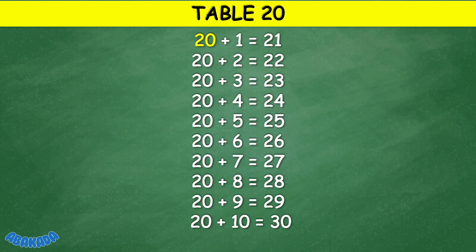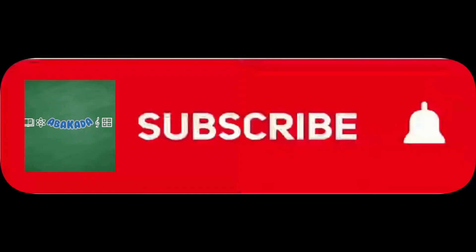Table 20: 20 plus 1 equals 21, 20 plus 2 equals 22, 20 plus 3 equals 23, 20 plus 4 equals 24, 20 plus 5 equals 25, 20 plus 6 equals 26, 20 plus 7 equals 27, 20 plus 8 equals 28, 20 plus 9 equals 29, 20 plus 10 equals 30. Thank you for watching.